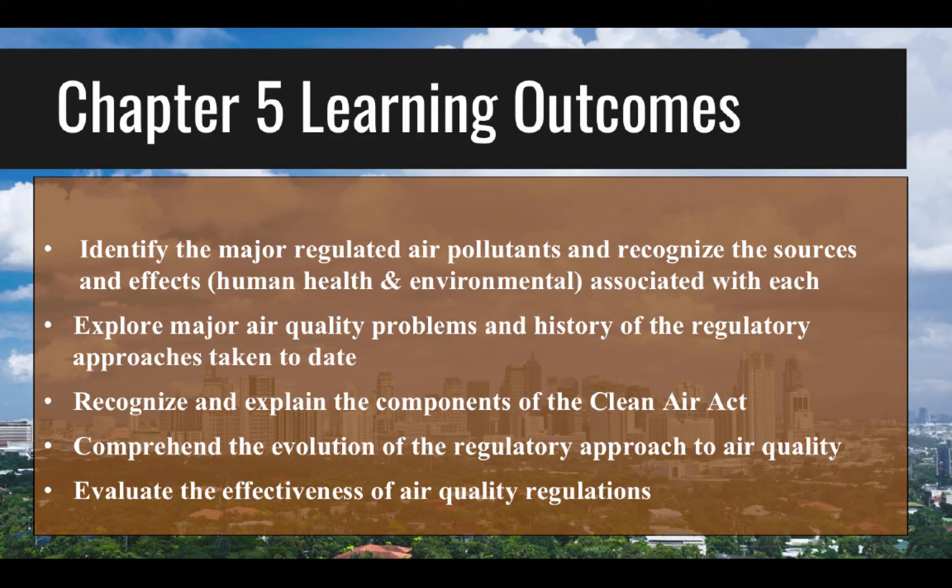The learning outcomes for this chapter are: identify the major regulated air pollutants and recognize the sources and effects — human health and environmental — associated with each; explore major air quality problems and the history of regulatory approaches taken to date; recognize and explain the components of the Clean Air Act; comprehend the evolution of the regulatory approach to air quality; and evaluate the effectiveness of air quality regulations.